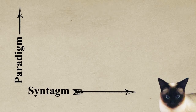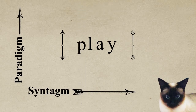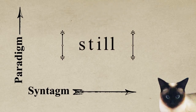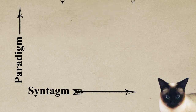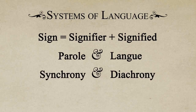Let's look at another example using sounds in the word 'clay.' In this syntagm, the C can be replaced by P to produce 'play,' but we can't replace the C with a T — English doesn't allow the TL sequence. Another syntagm: 'still.' Here we can replace the T with a P to produce the syntagm 'spill.' The T and the P belong to the same paradigm in this example. The axes of the syntagm and the paradigm are key to understanding what Saussure means when he talks about meaning depending on the systems of a language.